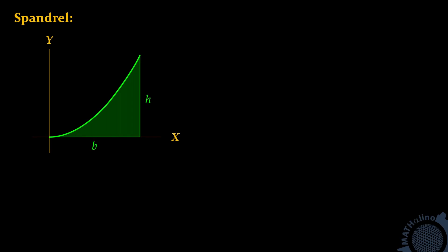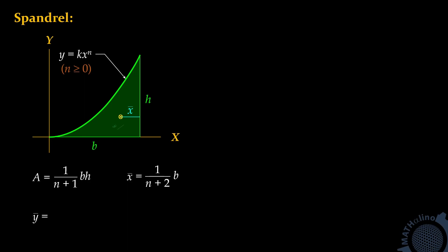Before we go to our discussion about the center of moment and area moment method, let us first go back to our spandrel formulas. The area is equal to 1 over (n plus 1) times b times h. The barred x is equal to 1 over (n plus 2) times b. And the barred y is equal to (n plus 1) all over (4n plus 2) of h. As we discussed in the previous video, we only need two formulas here: the area and the barred x.